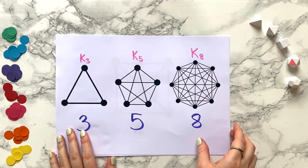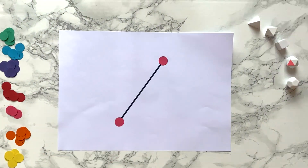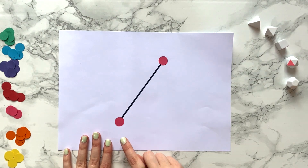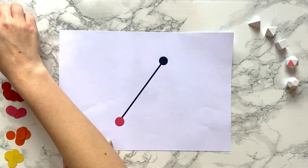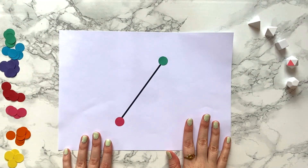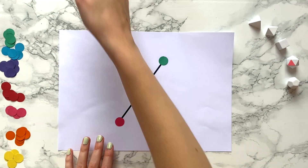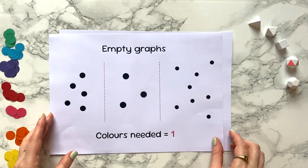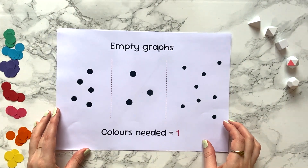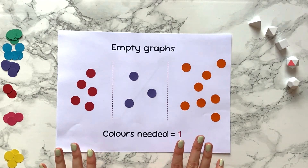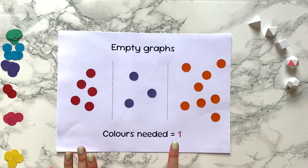What can we say about more general graphs? As soon as you have an edge in your graph, you need at least two colours, as the vertices at each end need to be different. The only possibility for the minimum number of colours being one is when there are no edges connecting any vertices. These graphs are called empty graphs. So if it's not an empty graph, then we need at least two colours.